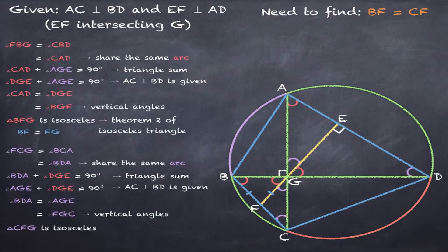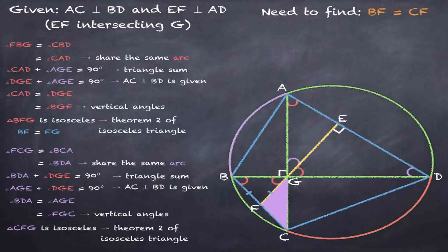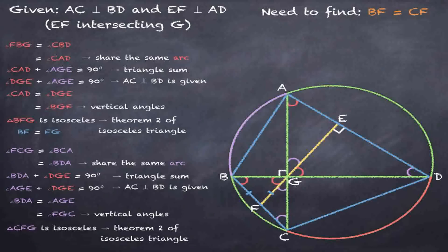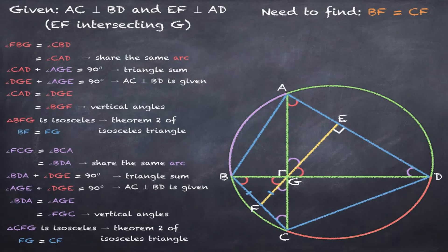Therefore, we find that triangle CFG is isosceles by our theorem 2 of isosceles triangle. Therefore, line FG is equal to line CF.